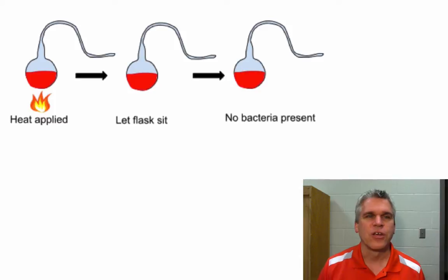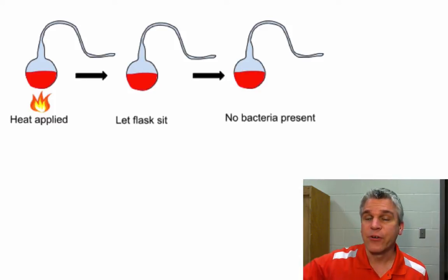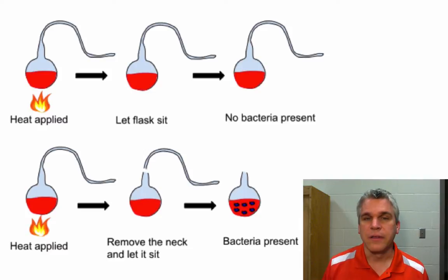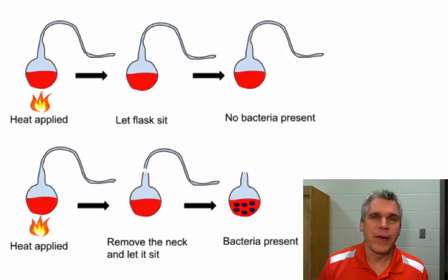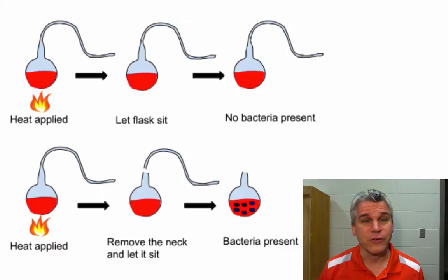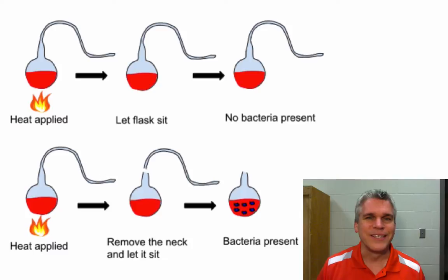You can see how he's got this really long, curved neck on the flask, and he let that sit for a period of time. He did this a second time, but this time he cut the neck off. What happened over time was that bacteria started to fill up in the broth. In the top example there was no bacteria present because they had no way of getting in — bacteria isn't just forming out of nothing. These bacterial spores obviously came from the air, and when they hit the nutrient broth they started to grow. But if they can't get to the nutrient broth, there's no growth. And so Pasteur disproved this process of spontaneous generation.